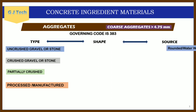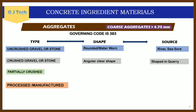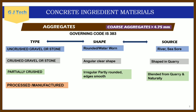The first type is uncrushed gravel or stone, which are rounded or water-worn, sourced from river beds or sea beds. The second type is crushed gravel or stone — more preferable, with angular shapes and clear edges, sourced from quarries from different rock types. The third type is partially crushed aggregates, which are a mixture of quarry material and natural aggregates, sometimes available naturally in irregular shapes, also termed irregular aggregates.